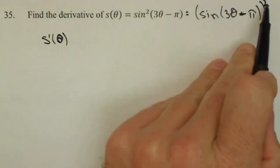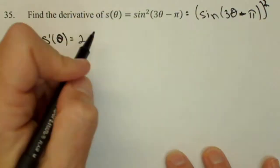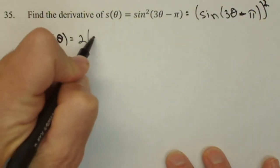So the outside function is actually that exponent which needs to come out front. So 2, decrease the exponent by 1, but we leave that inside alone.